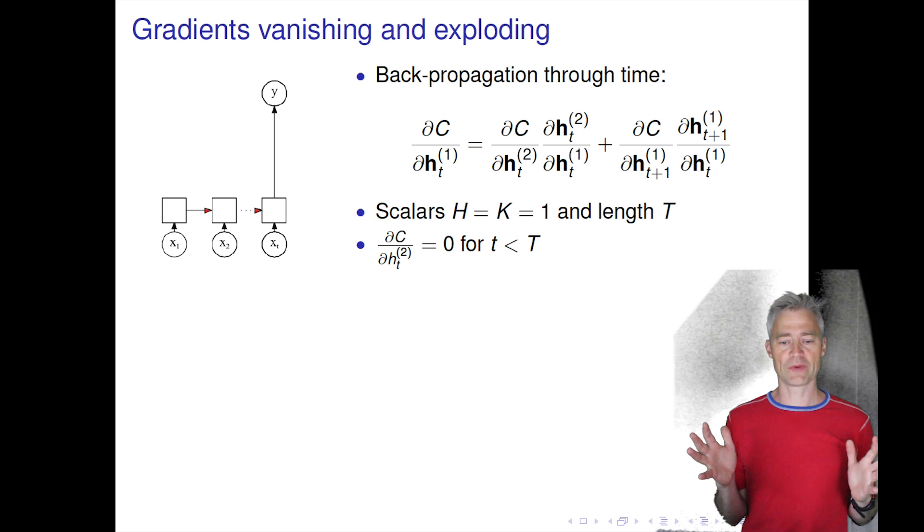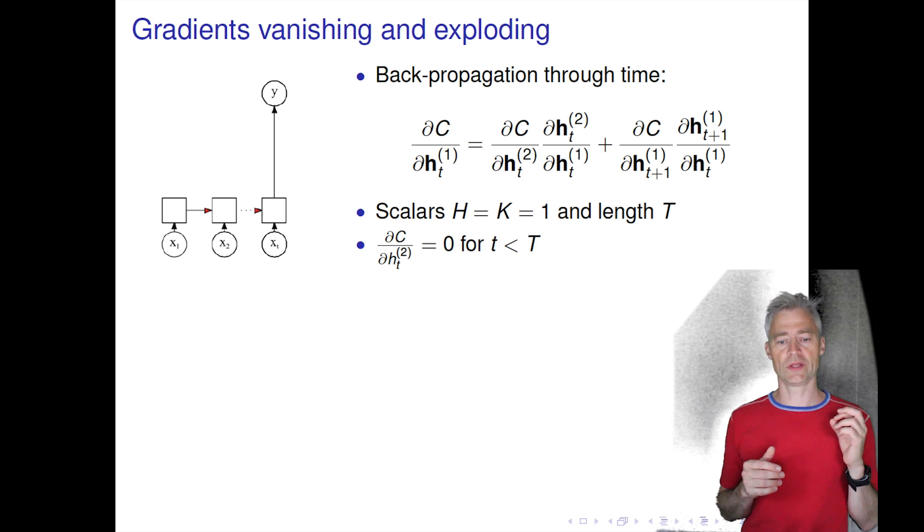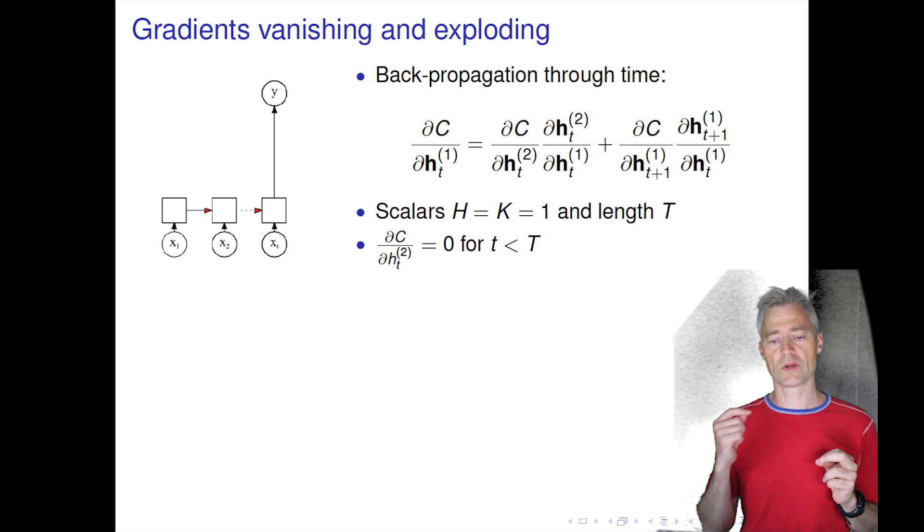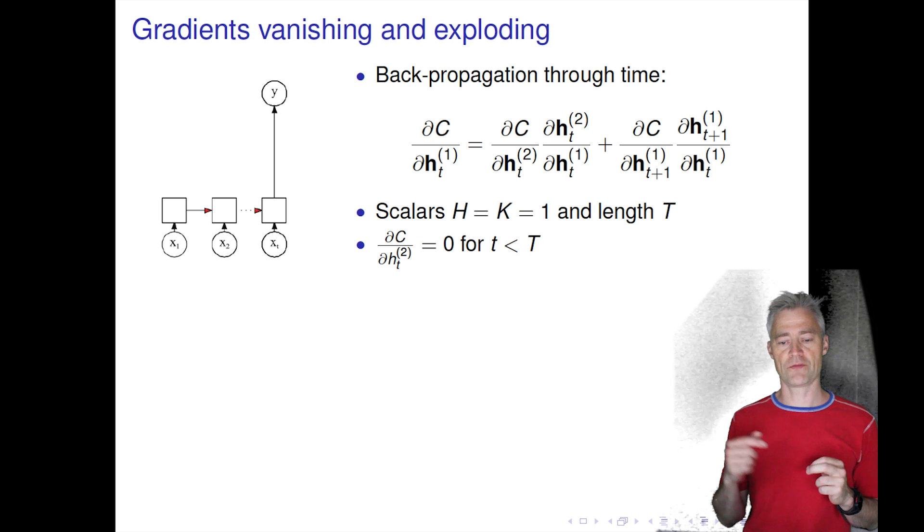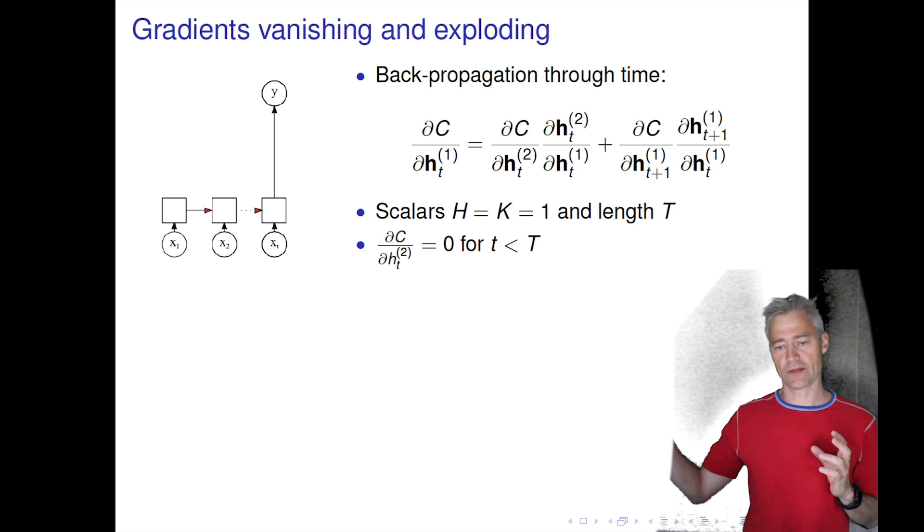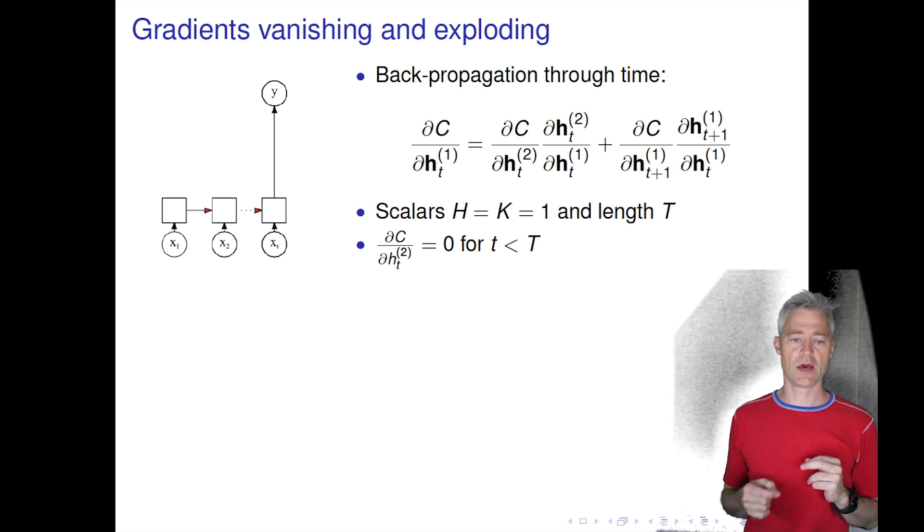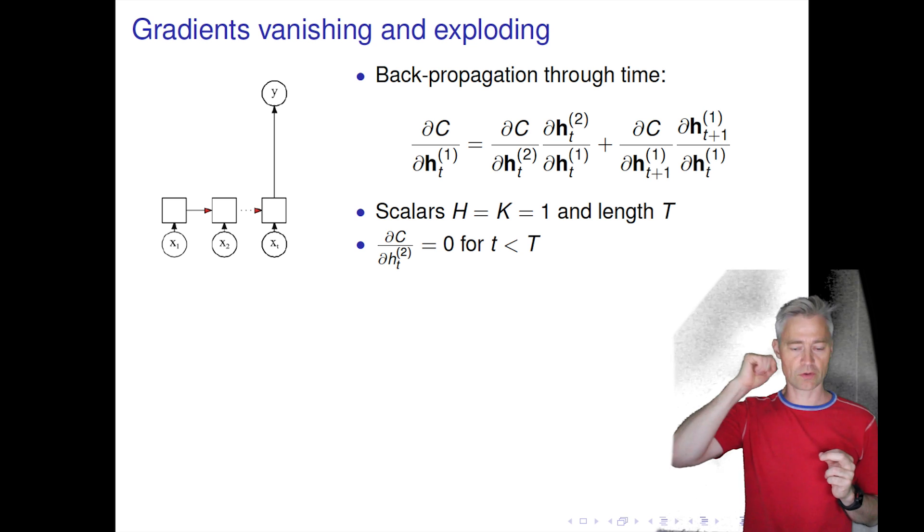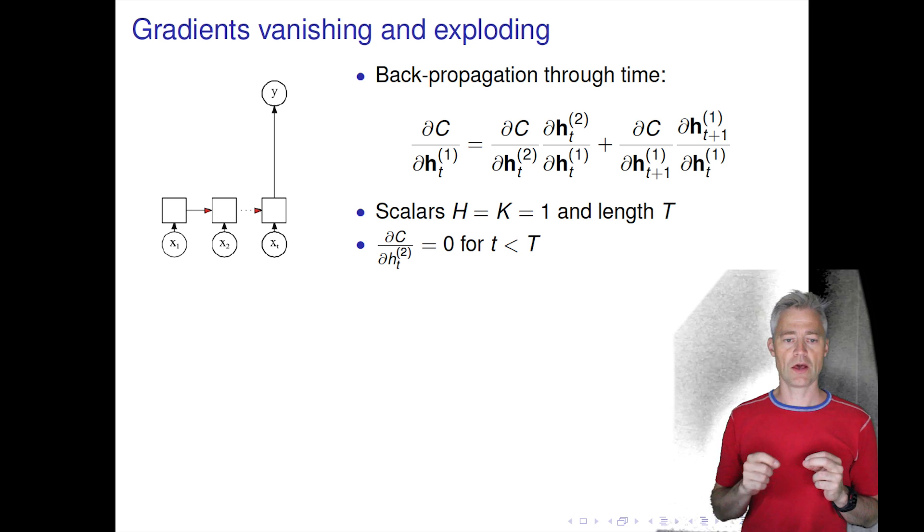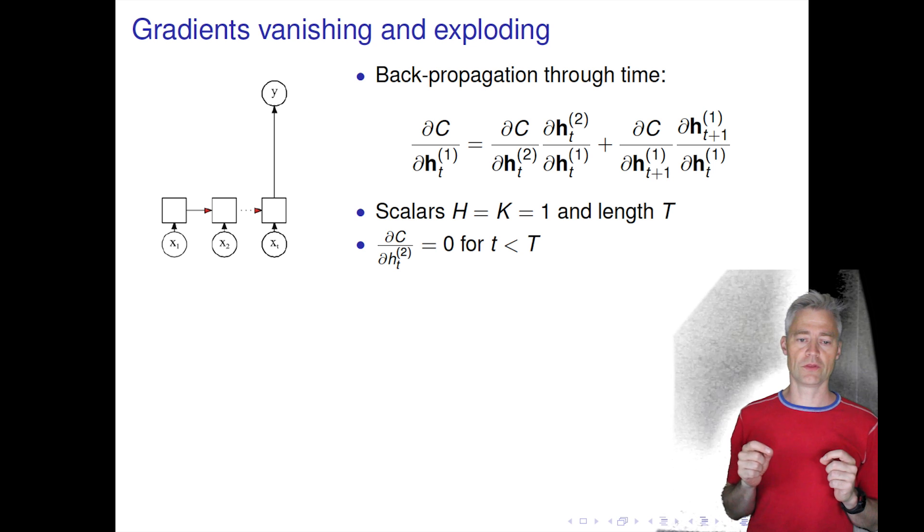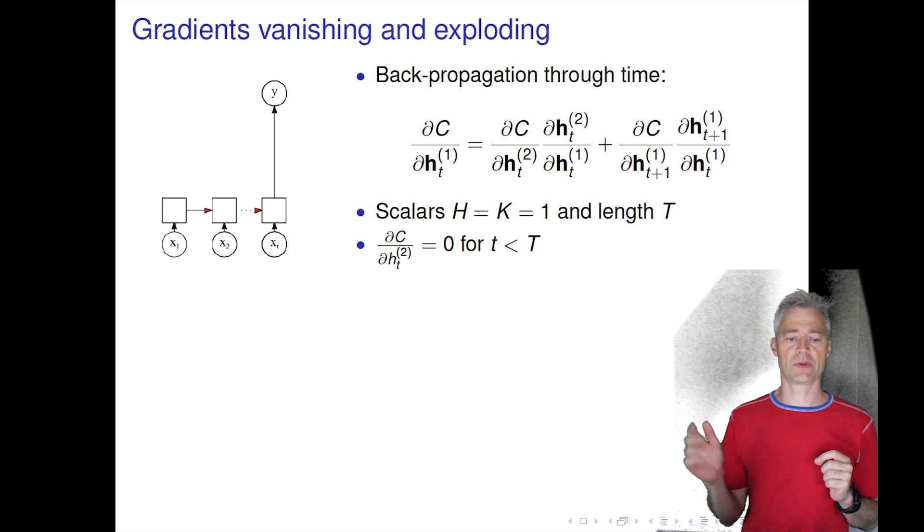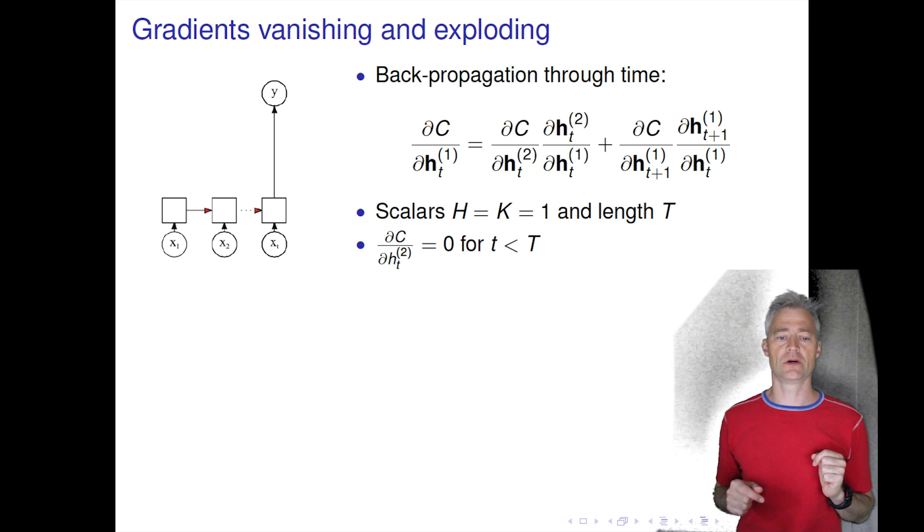Let's try to make a simple network here. We have only one input, one hidden unit, and a sequence of length capital T. Now we assume that the cost function only depends on the last time step.